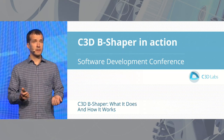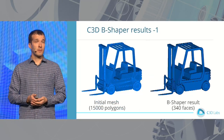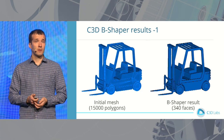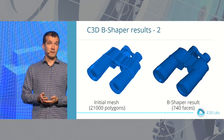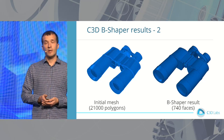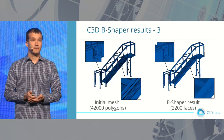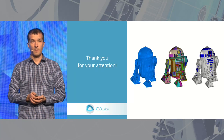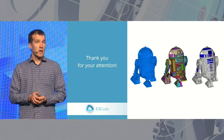The first example is a polygonal mesh of a lifter vehicle: the source mesh of more than 15,000 polygons is transformed into 340 B-REP faces. Another example shows more than 21,000 polygons transformed into a B-REP model with 740 faces. For a large engineering model, C3D B-Shaper also demonstrates a good result. We are also working on advancing the automatic segmentation algorithm and improving the construction of free-form NURBS surfaces. Thank you for your attention.